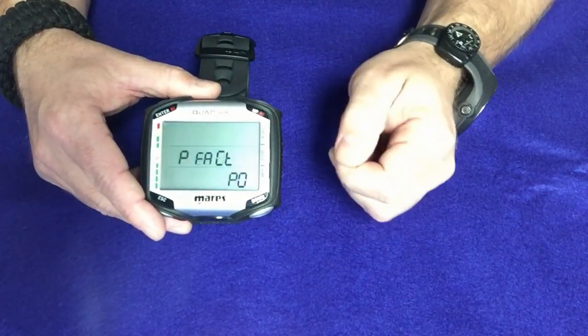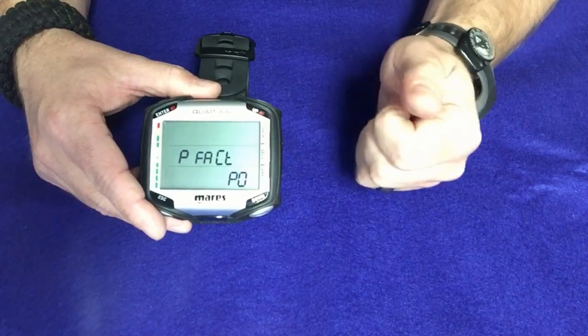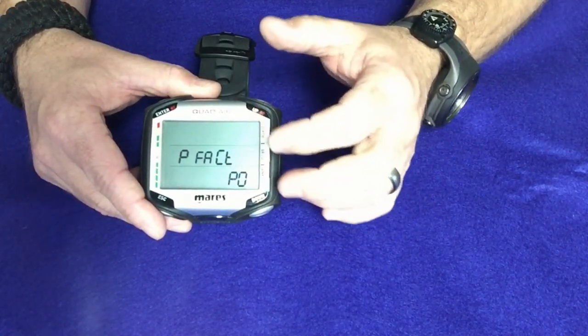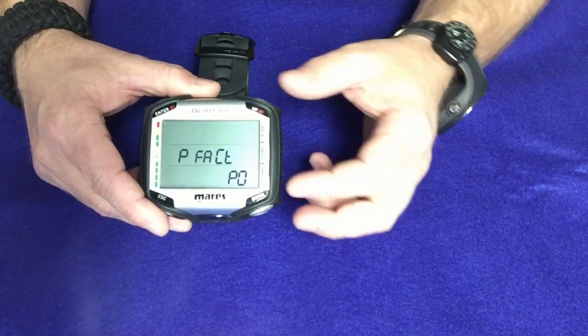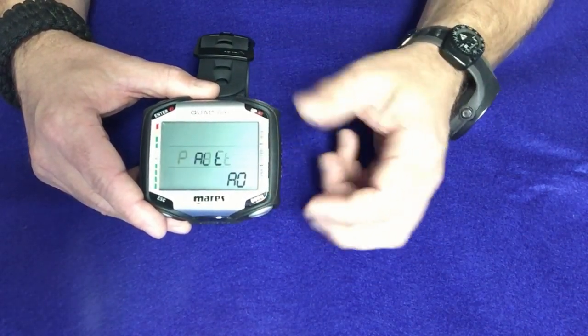Using the up button as well, I'm going to go into the p-factor. I can change it if I want to. This is where you're actually changing algorithms. If you want a more conservative or more liberal algorithm, you can actually change it there.